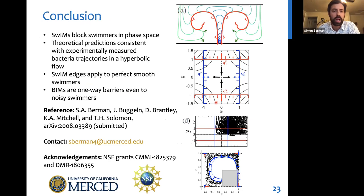So now I'll just quickly sum up. We identified barriers in phase space to swimmers, known as SWIMs. And on the basis of this, we explained the trajectories of experimentally measured swimming bacteria in a simple hyperbolic fluid flow. And we found a distinction between the barriers for perfect smooth swimmers, namely these swim edges, and more realistic noisy swimmers, which are these BIMs from the earlier front propagation theory. I invite you to check out our recently submitted preprint on this work, and I'll happily take any questions now. Thank you.